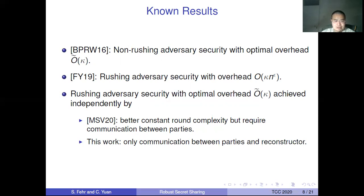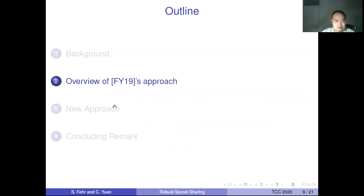There are two independent works achieving optimal overhead against the Russian adversary: the Crypto 2020 work and our current work. Both achieve optimal overhead but take completely different approaches. In their paper, the round complexity is smaller — they have two rounds — but they require communication between parties. Our work has five rounds, but we don't need communication between parties and reconstructors. This is the difference between our two works.